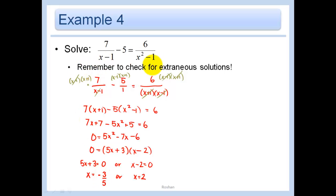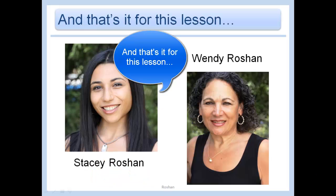Let's check for extraneous solutions. Well, the negative 3/5 does not give us a 0 on the bottom. The 2 also does not give us a 0 on the bottom. You can check them, but they both work. You really want to go back and always check that neither of them gives you 0 in the denominator, though. And that's it for this lesson. Bye!